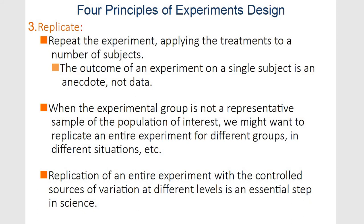Principle number three is you've got to replicate. Seeing what happens with just one plant, one animal, or one person — one unit — that's an anecdote, not data. Just having one piece of information doesn't give you anything. You can't apply that to the population — that could have been a special case. If your experimental group isn't representative of the population of interest, you've got to start replicating for different groups in different situations.